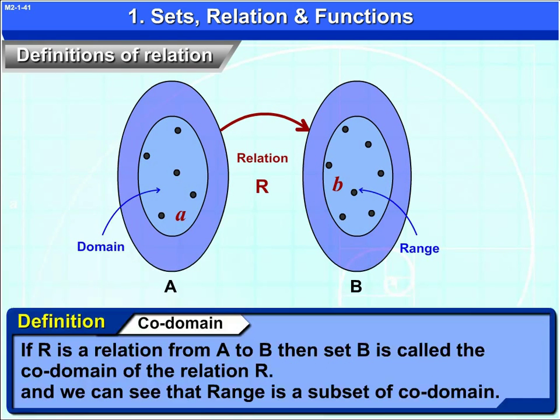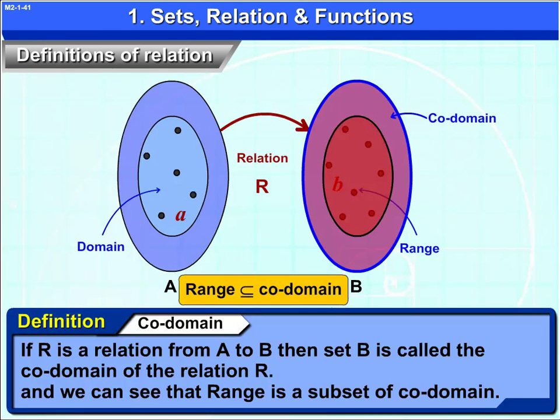Codomain, if R is a relation from A to B, then set B is called the co-domain of the relation R. And we see that range is a subset of Codomain.